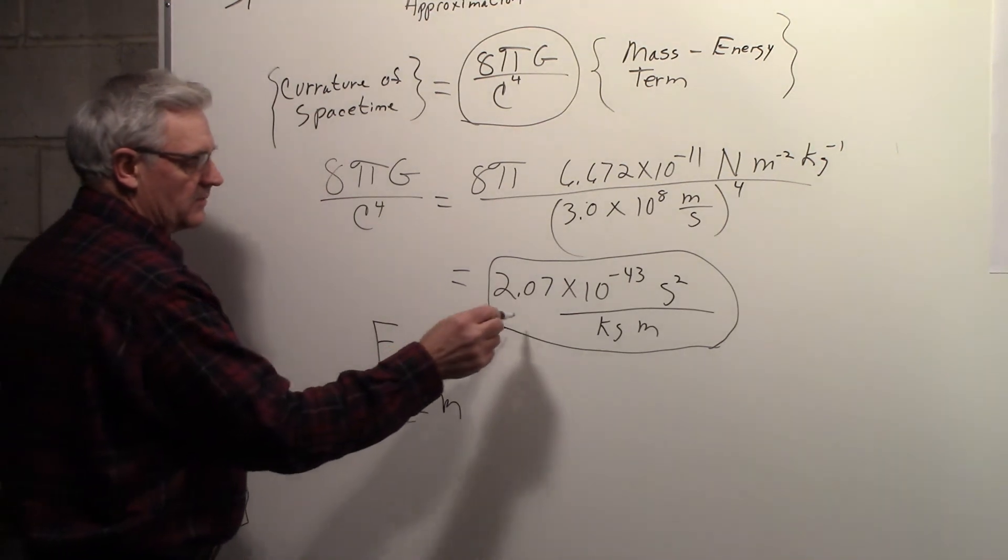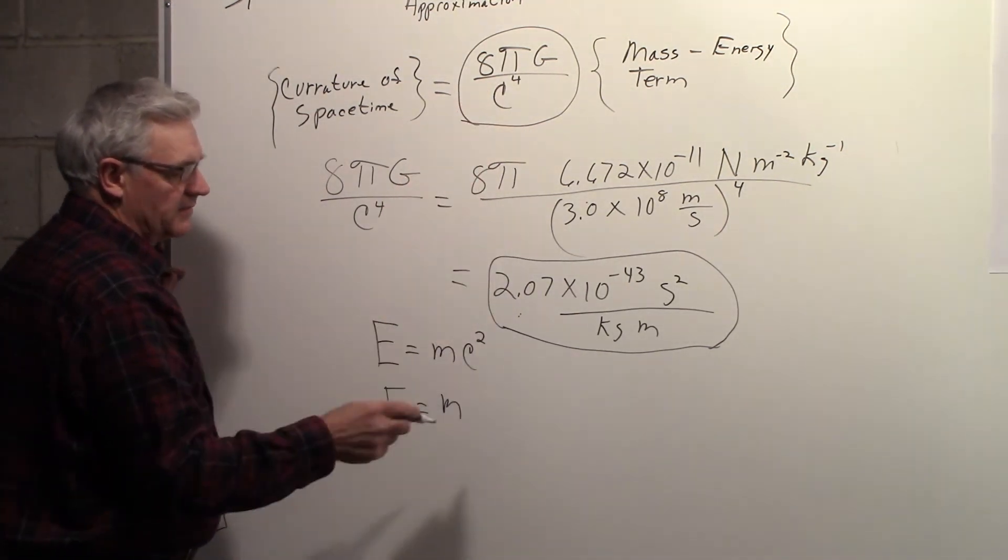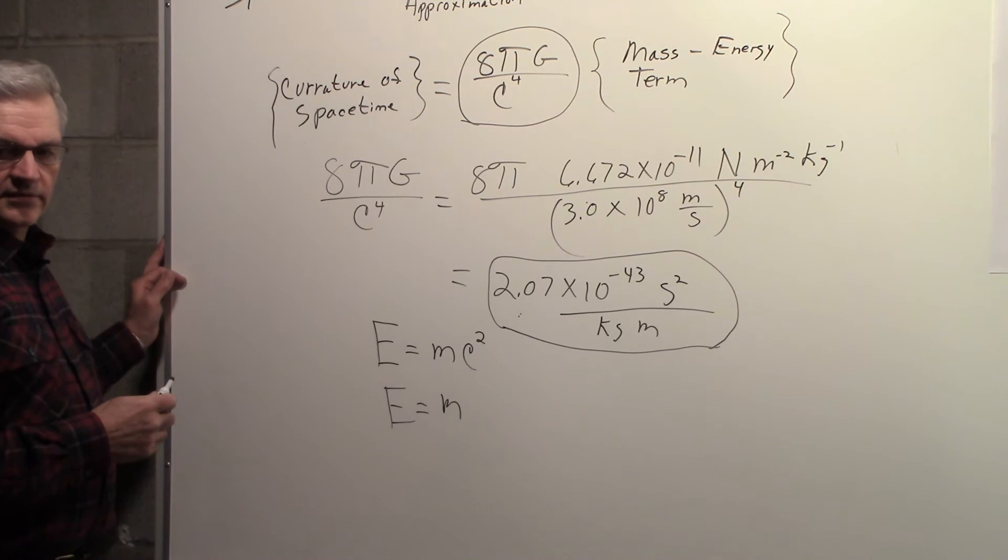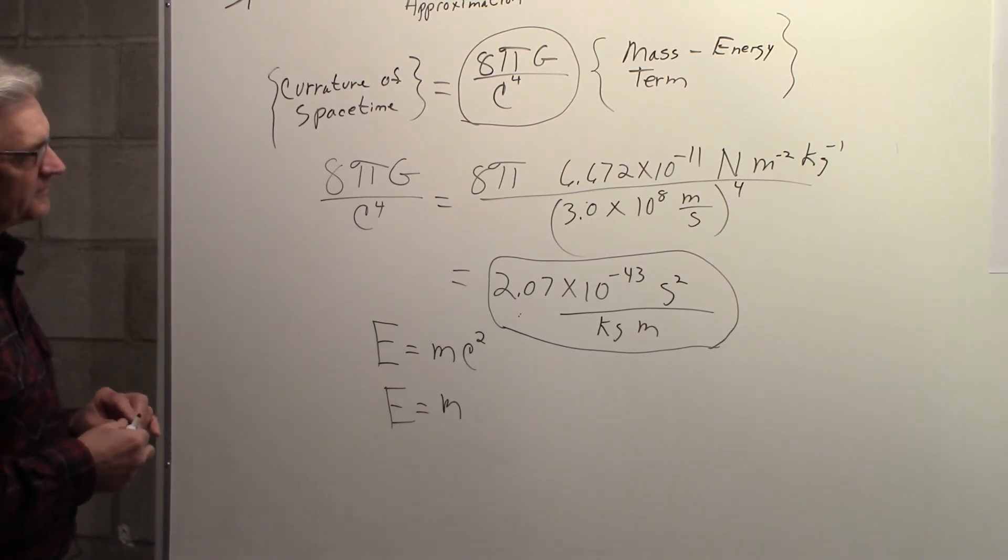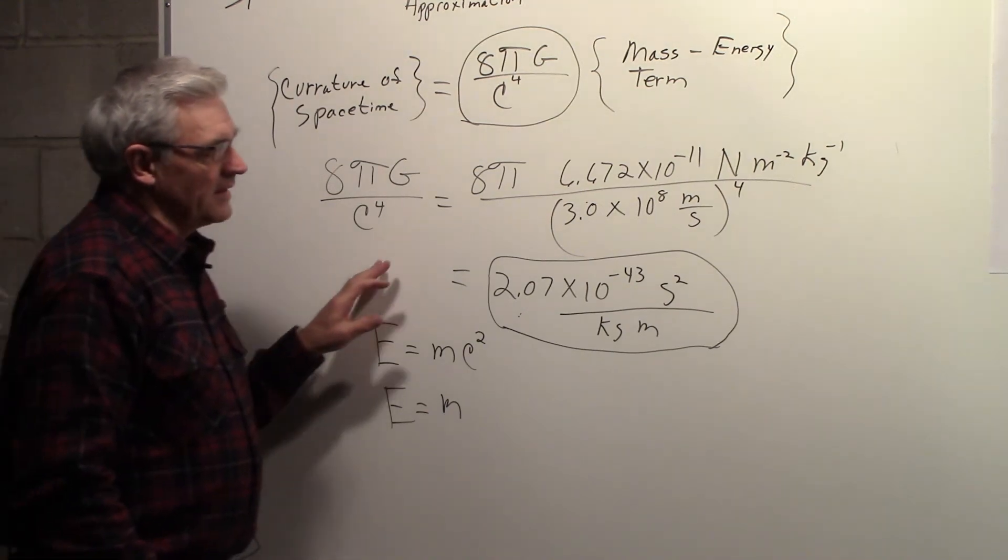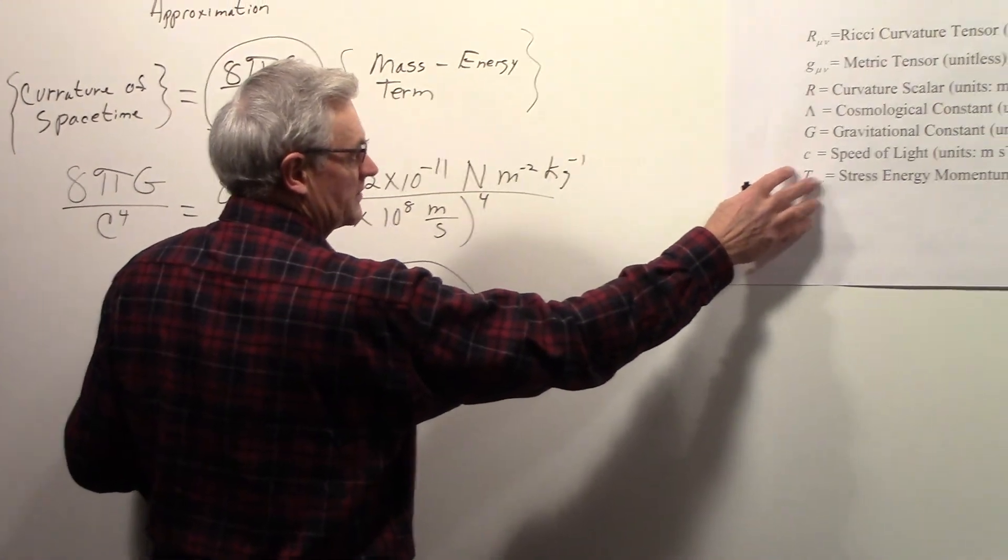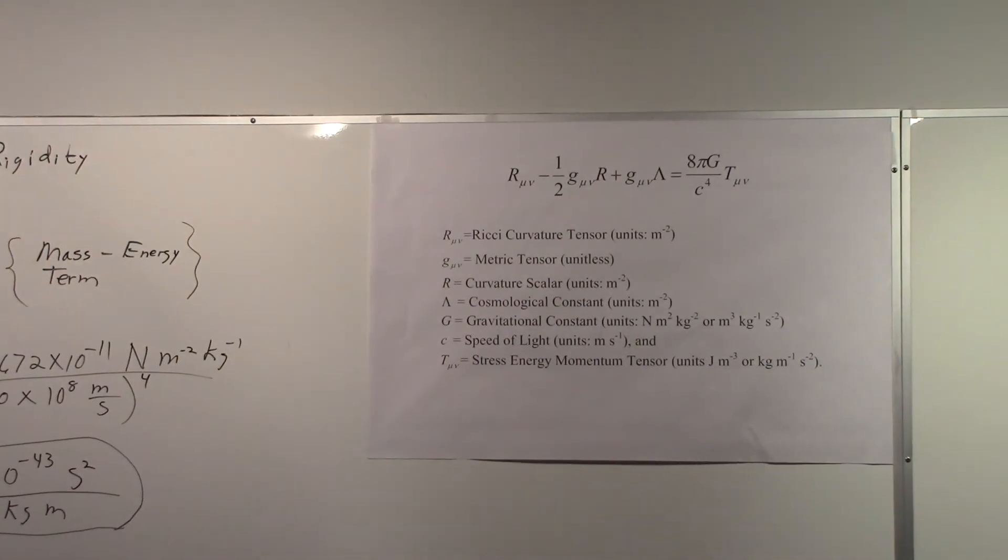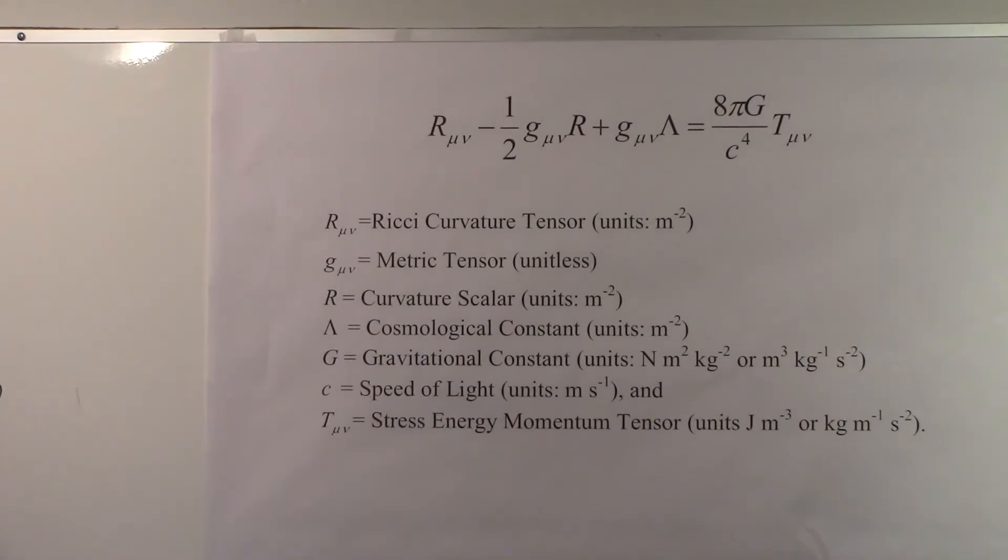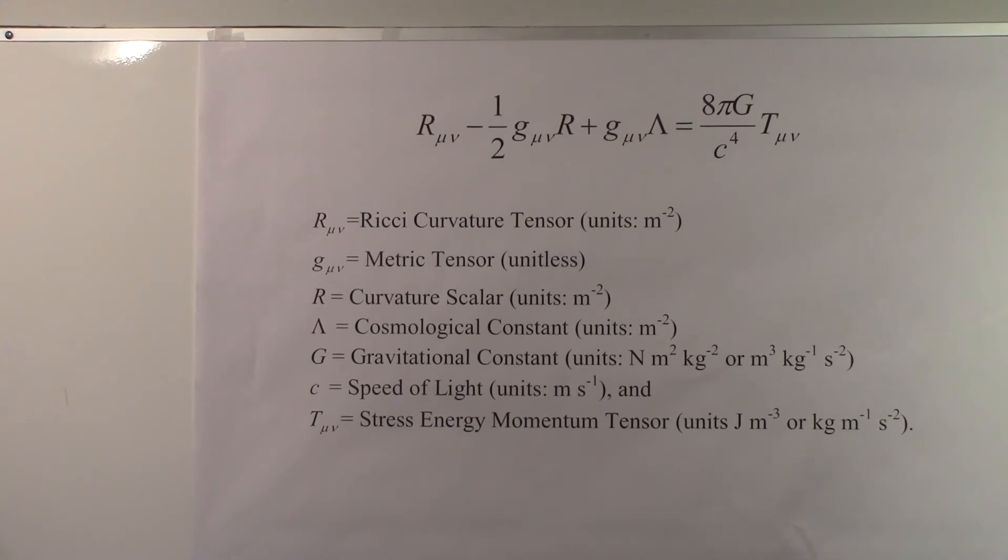And that constant, 8πG over c to the fourth works out to that value. And again, that's an extremely rough approximation to the actual Einstein equation in general relativity.